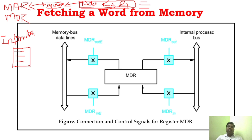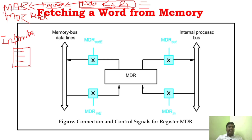The processor sends the address information of this particular instruction to the MAR and initiates the read cycle. After the read cycle is initiated, at the end of the read cycle, the instruction is transferred from MAR to the MDR — memory data register.